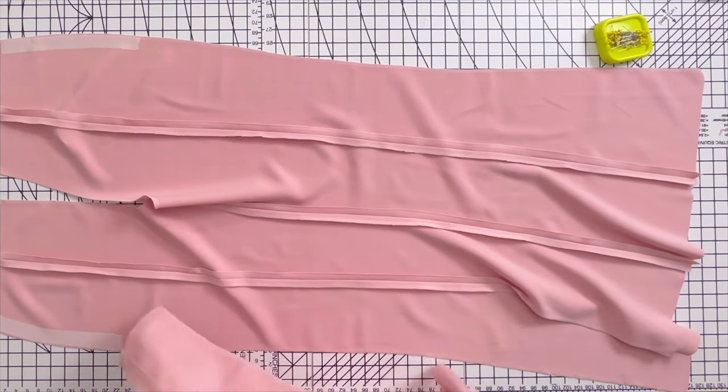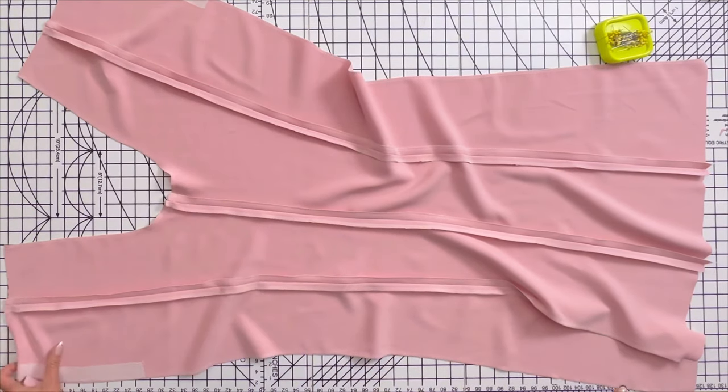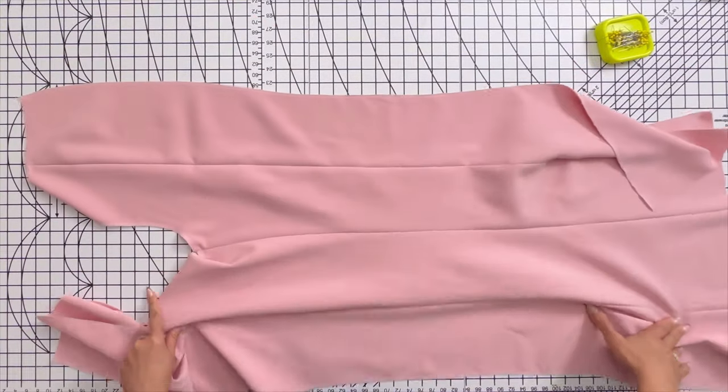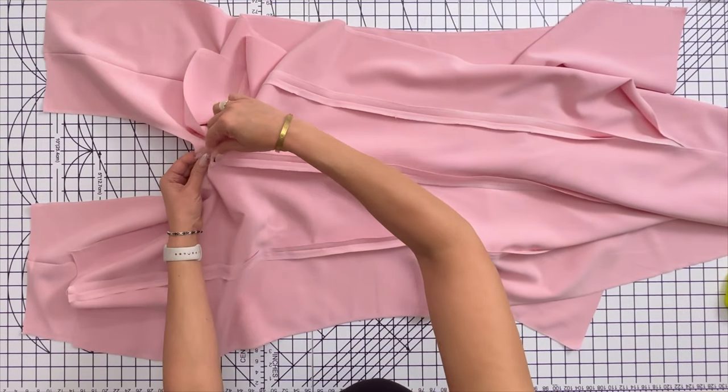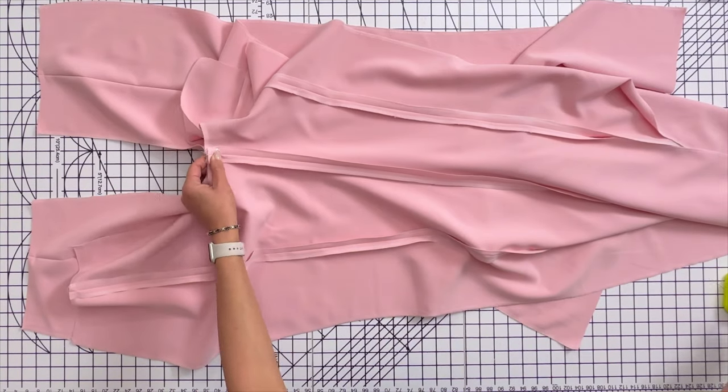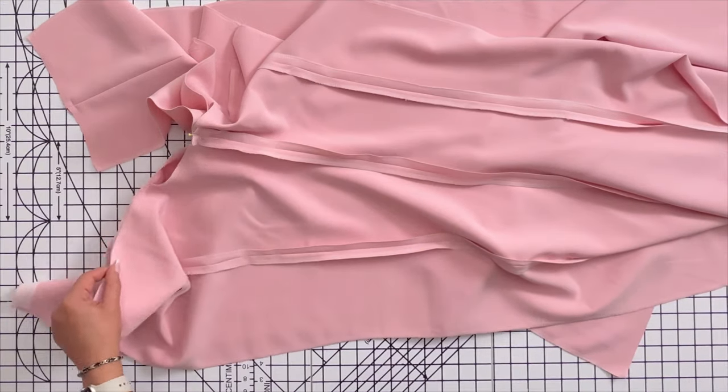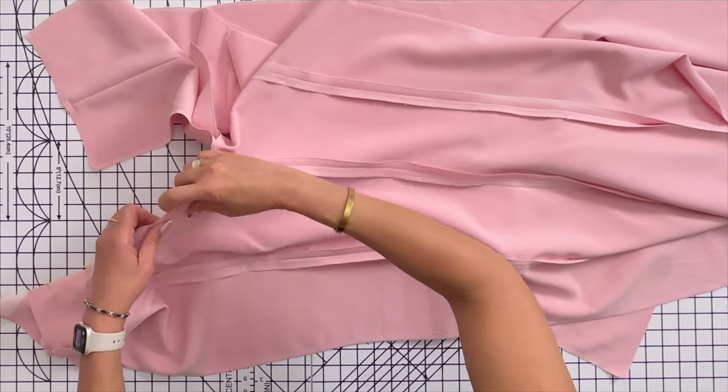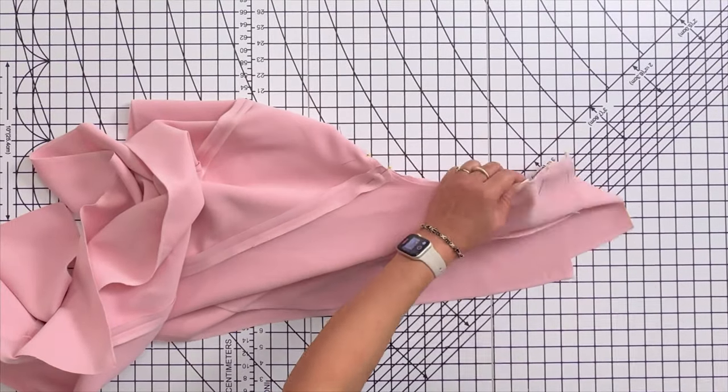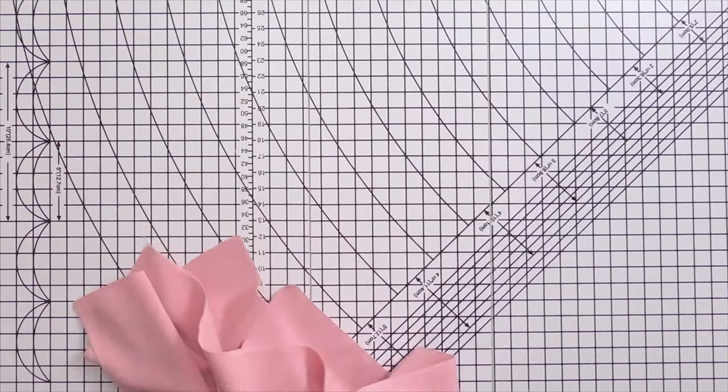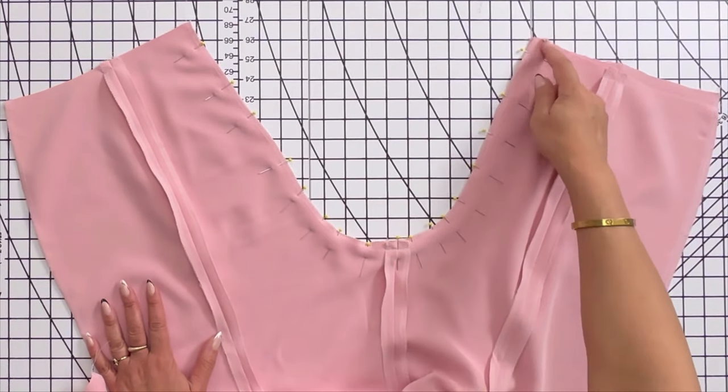Now that we've sewn both legs, we're going to go ahead and join both sides at the center seam with right sides together. Let's match that center leg seam first and pin all the way around. Now we're going to take it to the sewing machine and stitch a five-eighth of an inch seam allowance all the way around.